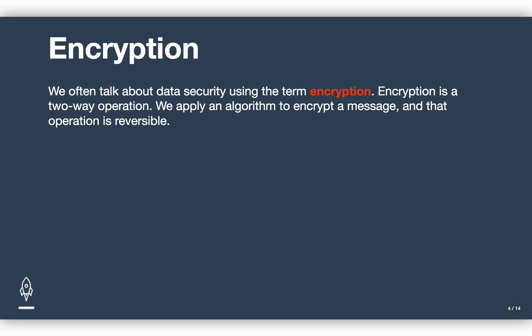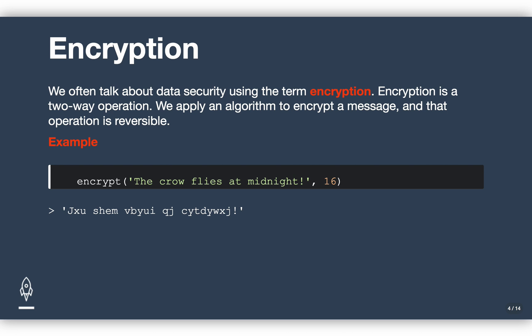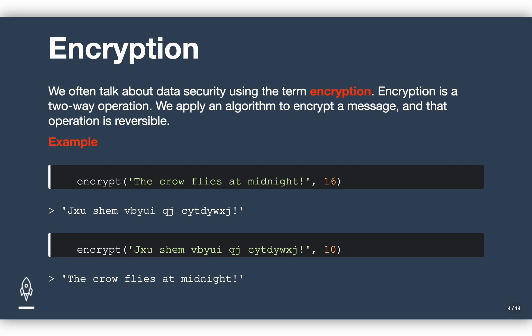When we talk about data security, we usually use the term encryption. In programming, encryption means something specific — it refers to a two-way operation. We apply an algorithm to encrypt a message, and then we reverse that algorithm to decrypt it. For example, when we worked on the Caesar problem, you were able to take a string and a rotation amount — or a key, in the realm of cryptography — and turn that into a new unintelligible string. What makes that encryption is that it's reversible: you can take a complementary key and reverse the operation to get the original string back. The whole point of encrypting a message is so someone else can unencrypt it on their end.